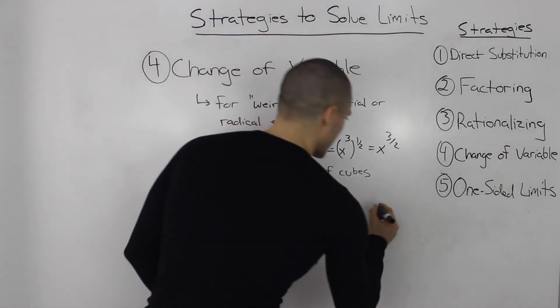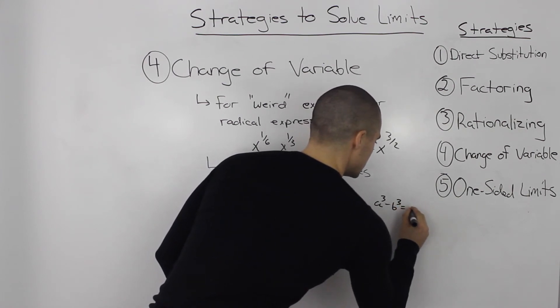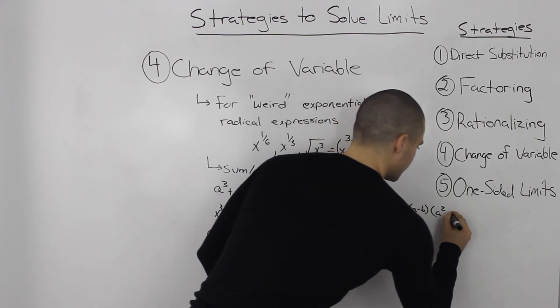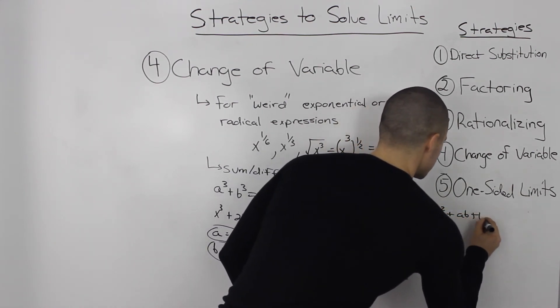And then the difference of cubes formula is a cubed minus b cubed is equal to a minus b, a squared plus ab plus b squared.